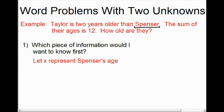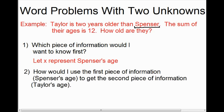We have to mathematically relate the second unknown to the first. One way to do this is to ask yourself: if I knew Spencer's age, how would I figure out Taylor's age? We're told that Taylor is two years older than Spencer, so if we were given Spencer's age, the easiest way to get Taylor's age would be to add two. Since X represents Spencer's age, Taylor's age has to be called X plus two.